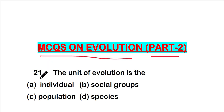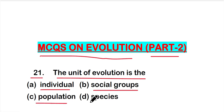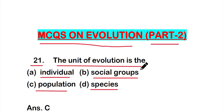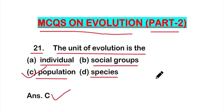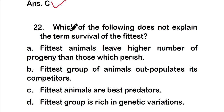Question number 21: The unit of evolution is — option A: individual, option B: social groups, option C: population, or option D: species. The right answer is option C, that is population. The unit of evolution is the population.